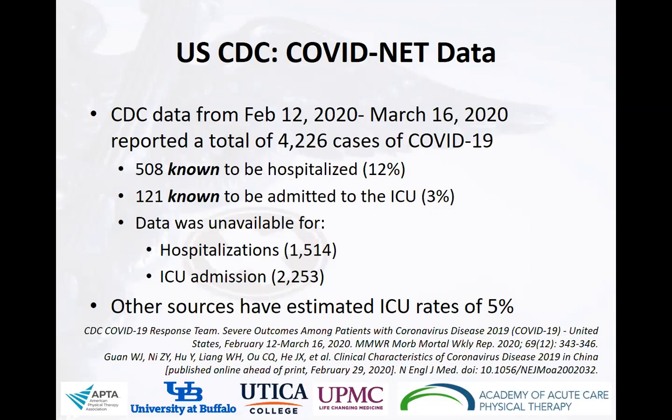Earlier information from COVIDNET was published looking at data from February 12th through March 16th. At that time, there were 4,226 confirmed cases of COVID-19, with 12% known to have been hospitalized and 3% known to have been in the ICU. However, a substantial amount of data was missing from those 4,000 or so people in terms of hospitalizations and ICU admissions. So it seems possible that these rates of 12% and 3% might be a little low. In fact, ICU rates out of China have estimated up to 5% of people infected with COVID-19 requiring stays in the ICU.